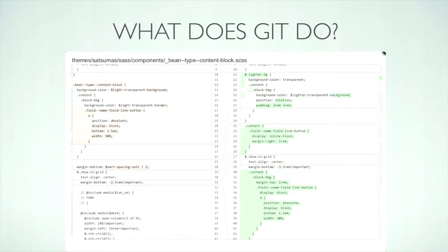Version control only really works well with text-based documents — things like PHP files, module files, CSS files. Even though you can stick binary files in there like zip files, compressed files, or image files, it'll track those changes but only as a whole file. It'll know the file changed, but it won't know that the red pixels were shifted to a darker red — it'll just track the whole file.